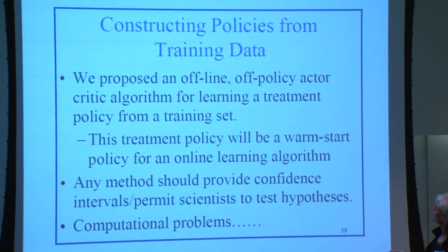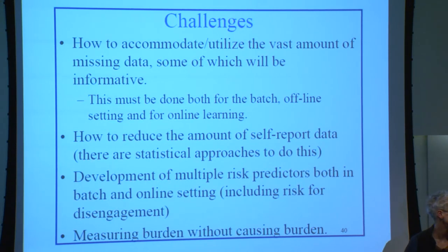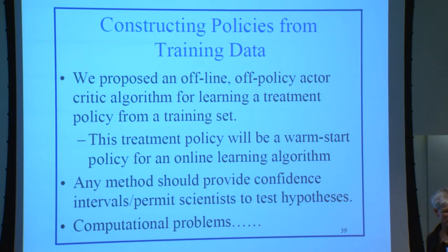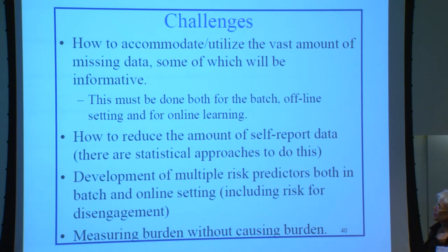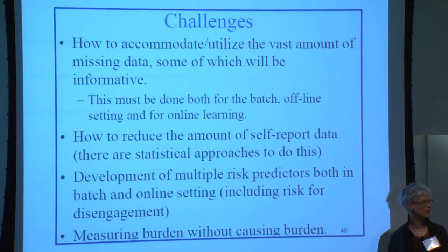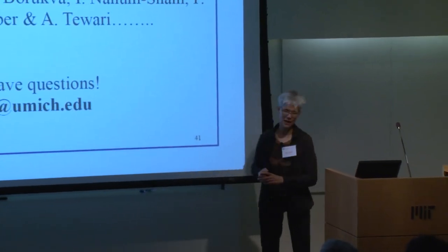Some final challenges: any methods used in control theory must permit scientists to test hypotheses — to test whether it's necessary to collect certain expensive information, otherwise it's a non-starter. Missing data is a profound problem, some of it informative. Reducing the amount of self-report data is critical, and there are statistical approaches no one is yet using. How do you detect that someone is starting to disengage so you can do something about it? How do you measure burden? These are all open questions.